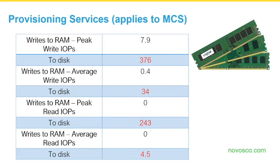For PVS — and this applies to MCS as well — make sure you're using cache in device RAM with overflow to hard disk as your write cache mode; it offers the best performance. When PVS target devices boot, they use a read-only vDisk and write data to RAM. RAM is quicker than disk. Looking at the table, write IOPS peak to RAM is 7.9 versus 376 to disk, and average write IOPS to RAM is 0.4 versus 34 to disk. Size your RAM write cache appropriately to keep writes to disk at a minimum, and if you do have to write to disk, use flash storage.